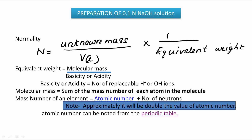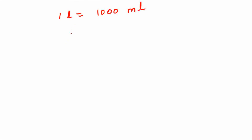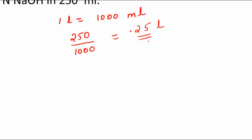Now we are going to calculate the normality. We need to prepare 0.1 normal NaOH in 250 mL. First, we need to convert 250 mL to liters. We know that 1 liter equals 1000 milliliters, so dividing 250 by 1000 gives 0.25 liters.